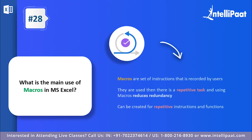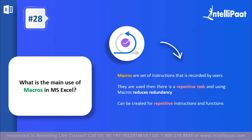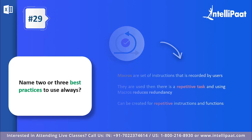Question twenty-eight: what is the main use of macros in MS Excel? Macros are a simple set of instructions that can be recorded by users. There may be certain repetitive tasks that need to be done again and again, which can get cumbersome and waste a lot of time. Macros step in to reduce redundancy on a big scale — they create a set of automated instructions that can run on repeated tasks and functions.